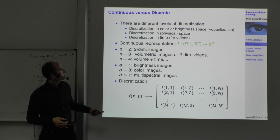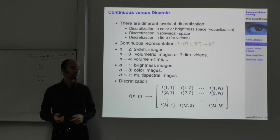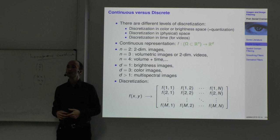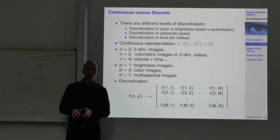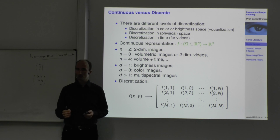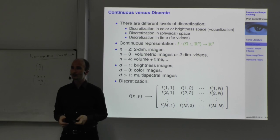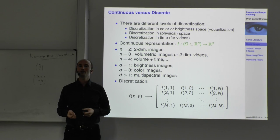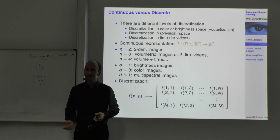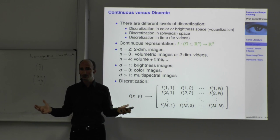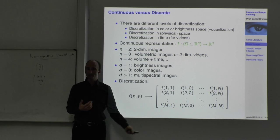D is the dimension of the output space. For grayscale images D is typically 1, for color images D is 3. When D is larger than 1, people talk about multispectral images, and when it's really large, hyperspectral images. I've never met anyone who can specify at what D it becomes hyper. New terminology is often a sales point to tell funding agencies you're doing something radically new — that's how hyperspectral comes about.